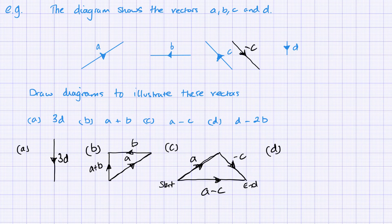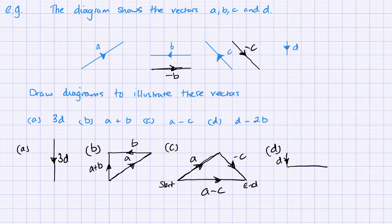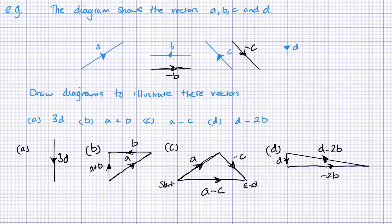Next we have D minus 2B. B is three squares to the left, so minus B is three squares to the right. D is one square down, and then we go six to the right. I'll use my ruler on this one — it's a little bit more awkward. And there we have our resulting vector, D minus 2B. Remember, just join your start and end points together — that's the direction you're going, from start to end, and that's how you know which way the arrow is pointing.